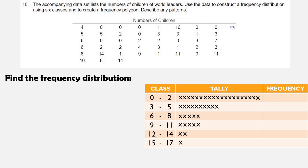So we can go ahead and count up each one of those tally column values. For the class from 0 to 2, that's a frequency of 20. From 3 to 5, it's 10. From 6 to 8, it's 5. And from 9 to 11, it's also 5. From 12 to 14, it's 2. And from 15 to 17, it's 1. So that is our frequency distribution.